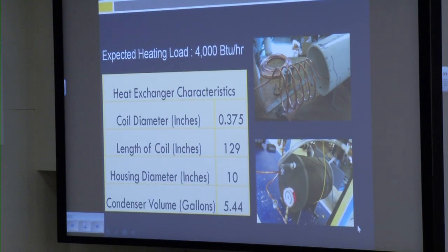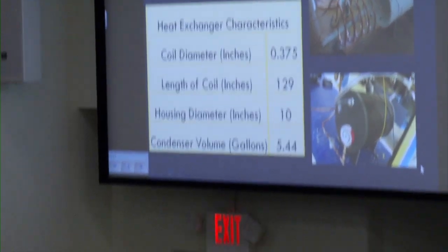After deciding on our refrigerant, we purchased a 1.5 horsepower compressor based on our budget and size constraints. We wanted a 10 to 15 degrees Celsius change of the water as it entered and exited the condenser, so we determined our expected heating load to be approximately 4,000 BTUs per hour. From this we performed heat exchanger analysis to determine condenser characteristics: a coil length of 129 inches with a 3/4-inch diameter, arranged in a helical coil. The housing diameter is 10 inches with a condenser length of 16 inches, accommodating approximately 5.44 gallons of water.